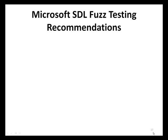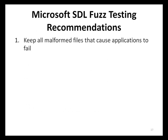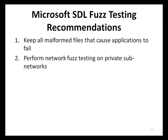The following tips can be used to help perform more effective fuzz testing exercises. The first recommendation is to keep all malformed files that cause an application to fail. These files will be useful in helping developers reproduce any vulnerabilities found and remediate them accordingly. Furthermore, these malformed files can be integrated into regression tests to ensure that specific vulnerabilities do not manifest in future versions of the application. The next recommendation is to perform network fuzz testing on private sub-networks.